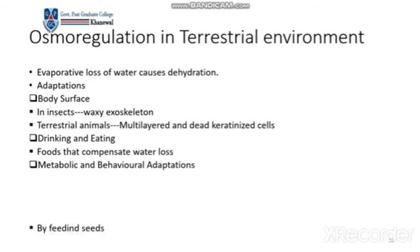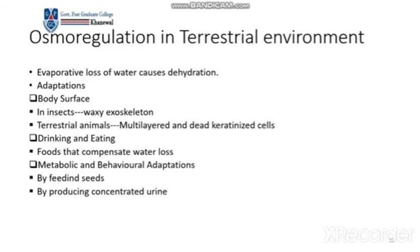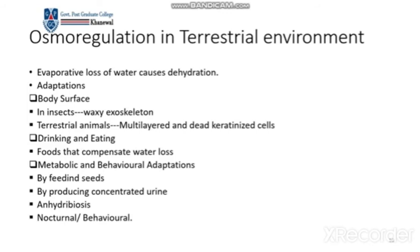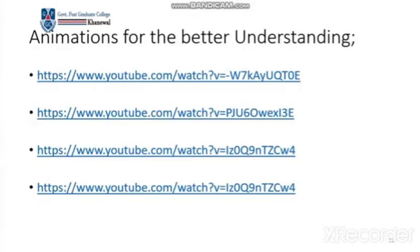Metabolic and behavioral adaptations include producing concentrated urine to reduce water loss. There is also the phenomenon of anhydrobiosis. As a behavioral adaptation, some animals are nocturnal — they are only active at night time to avoid heat and water loss.